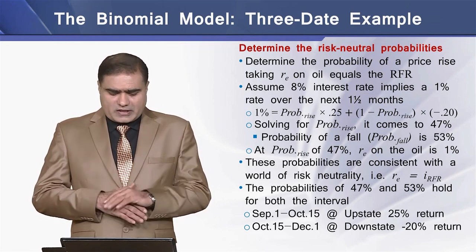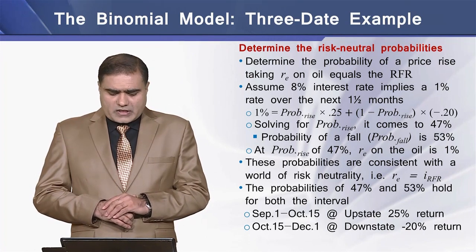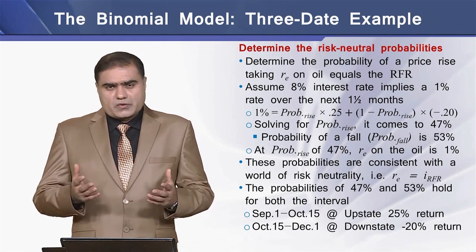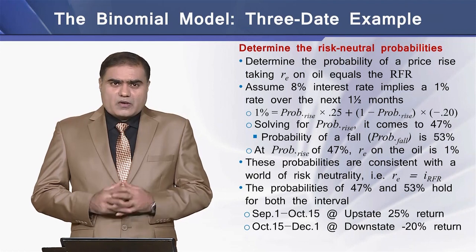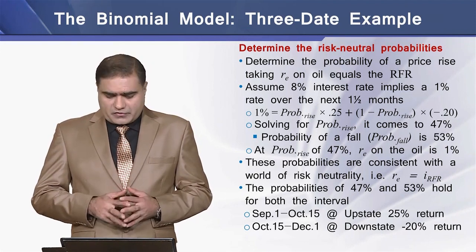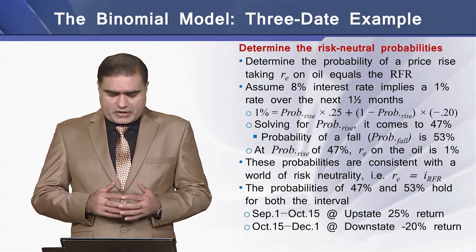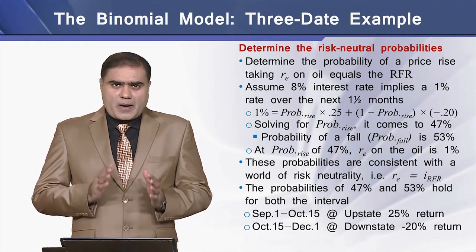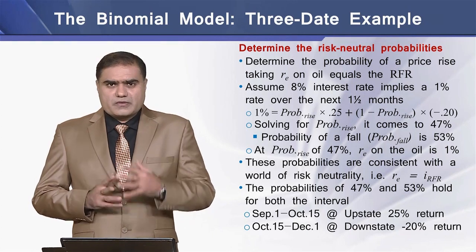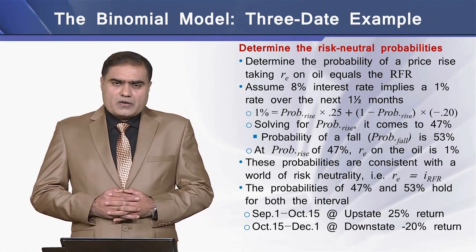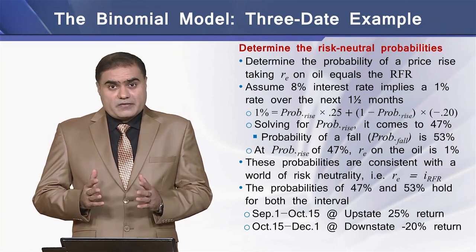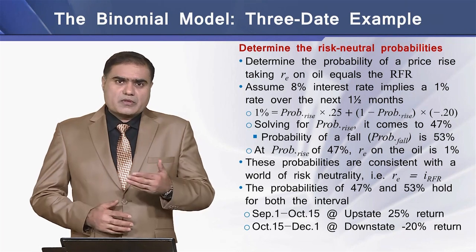At a probability of rise of 47%, the required rate of return on the oil is 1%. These probabilities are consistent with the world of risk neutrality, which assumes the required rate of return equals the riskless rate of interest. With probabilities of 47% and 53% holding for both periods, we have an upstate return of 25% from September 1 to October 15 and a downstate return of negative 20% from October 15 to December 1.